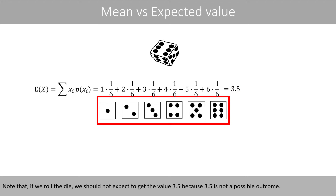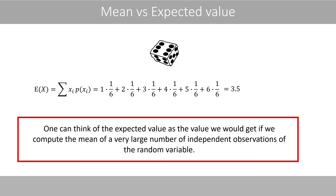Note that if we roll the die, we should not expect to get the value of 3.5, because 3.5 is not a possible outcome. One can think of the expected value as the value we would get if we compute the mean of a very large number of independent observations of the random variable.